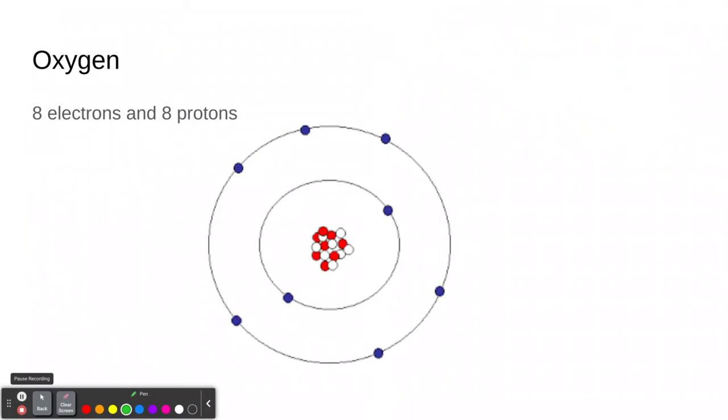So here you can see oxygen, which we breathe. We also breathe in nitrogen, but it's oxygen that we need. So it has eight electrons in its cloud, or these rings or orbits. And it also has eight protons. So it has an equal amount of electrons and protons. It also has eight neutrons. So right now, there is no charge on this oxygen.